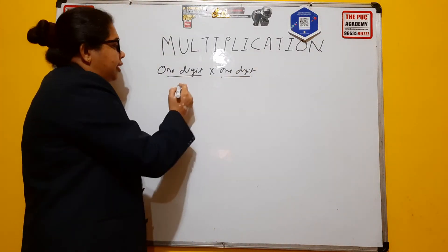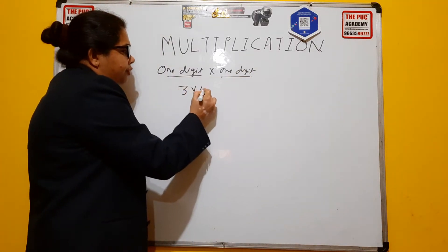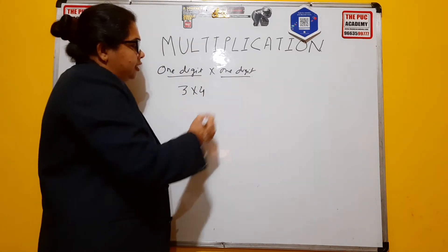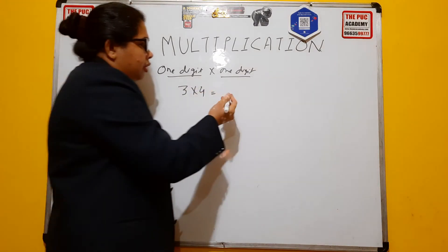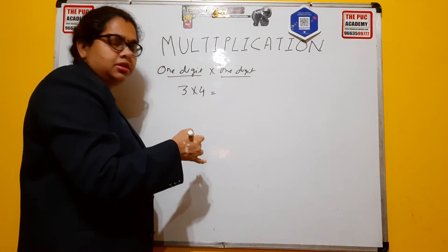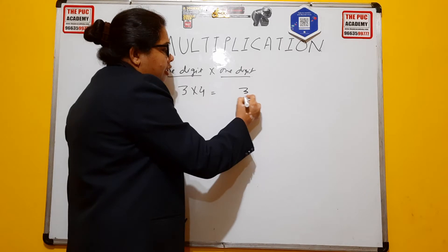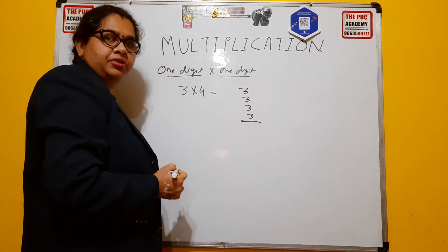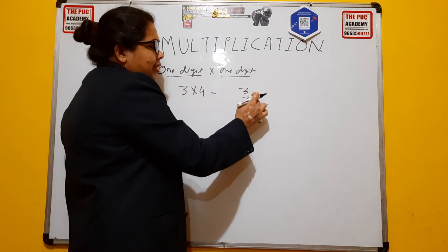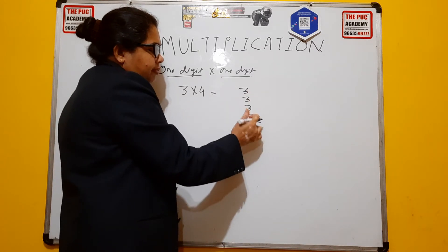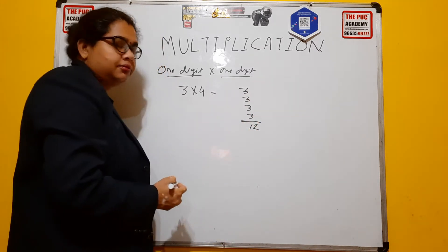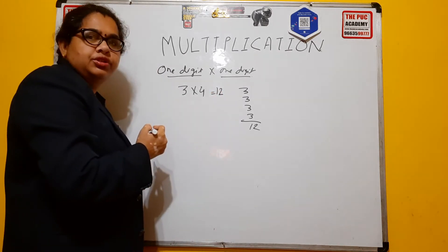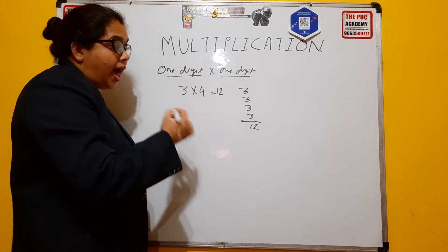It's very simple. For example, 3 times 4. If you are not aware of the tables, you can write 3 four times and add: 3 plus 3 is 6, 6 plus 3 is 9, 9 plus 3 is 12. So 3 into 4 equals 12.